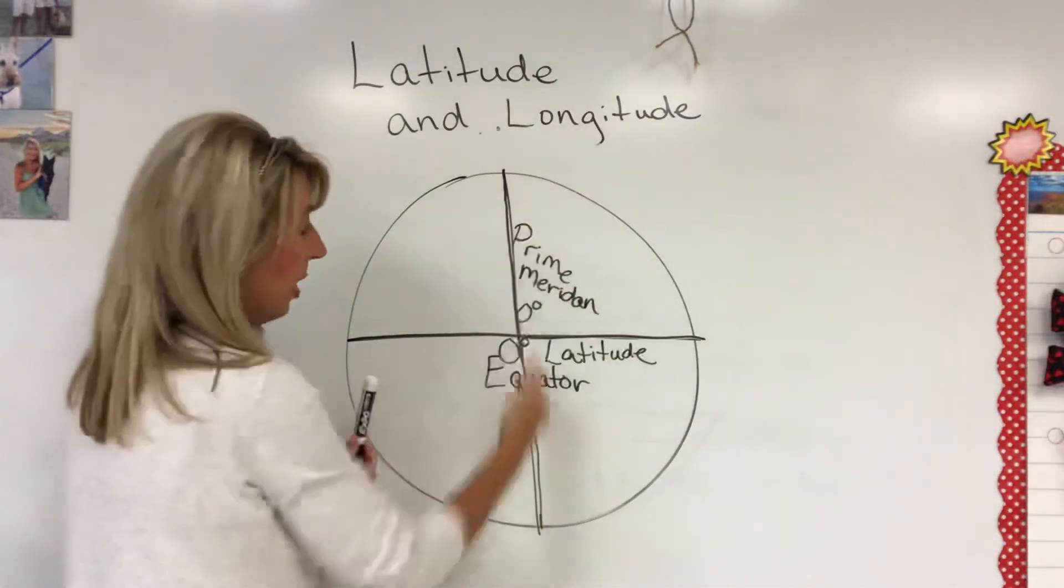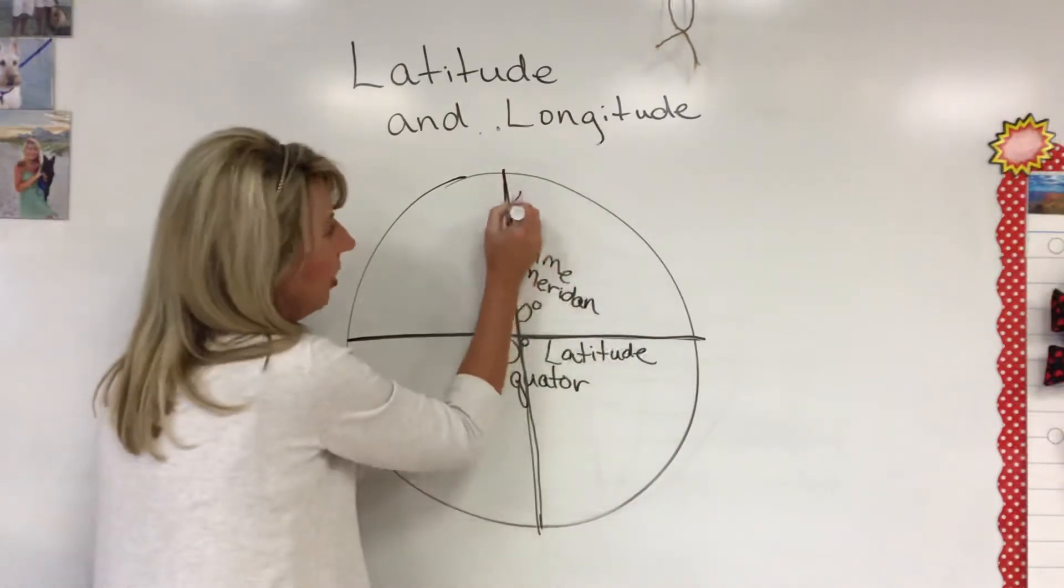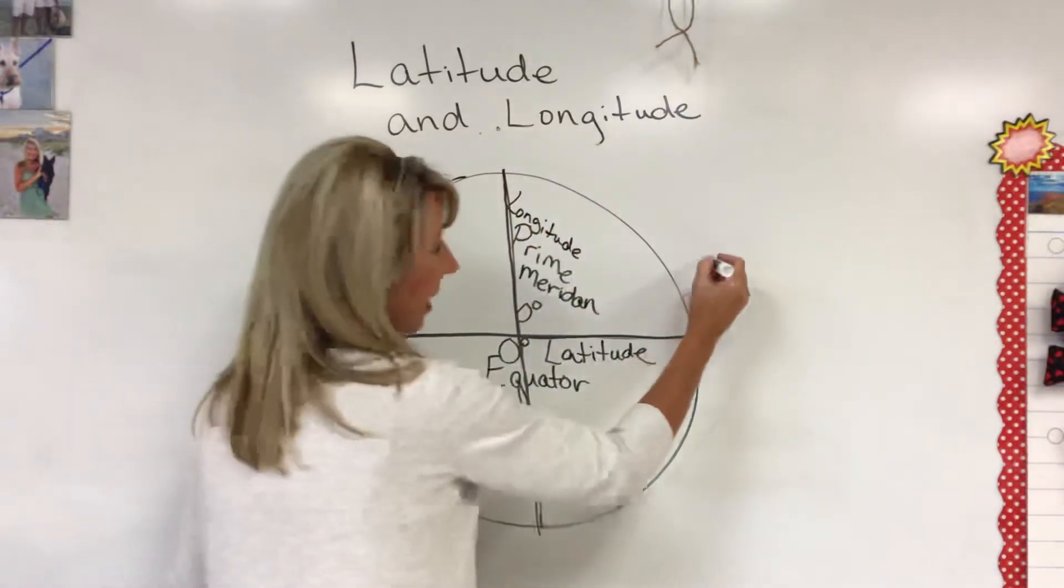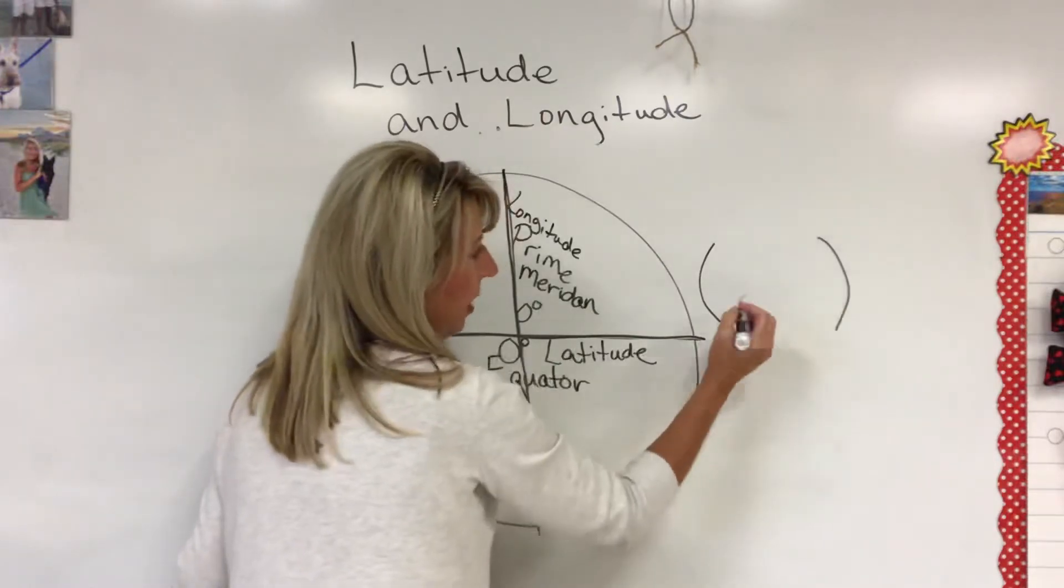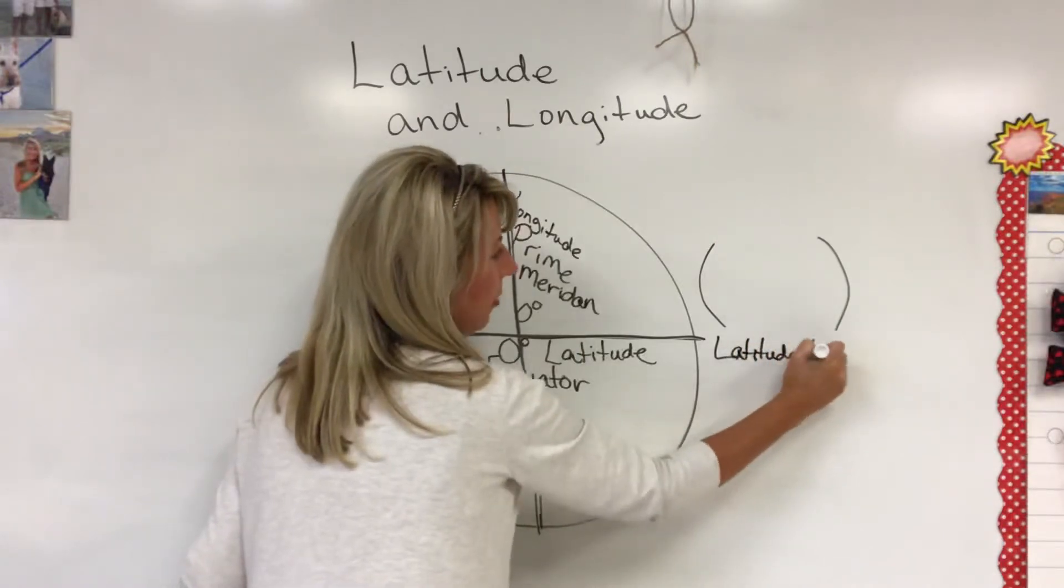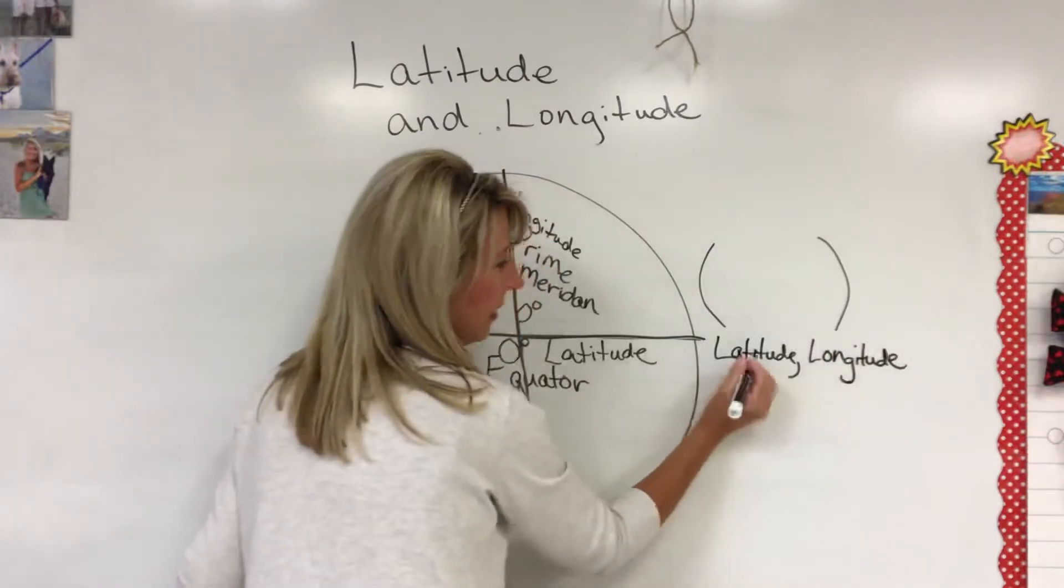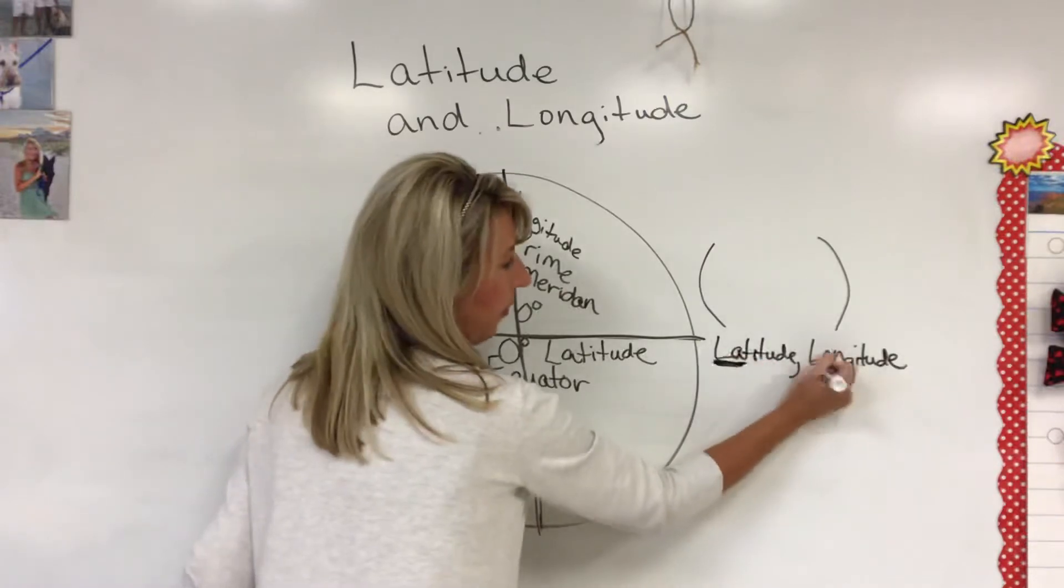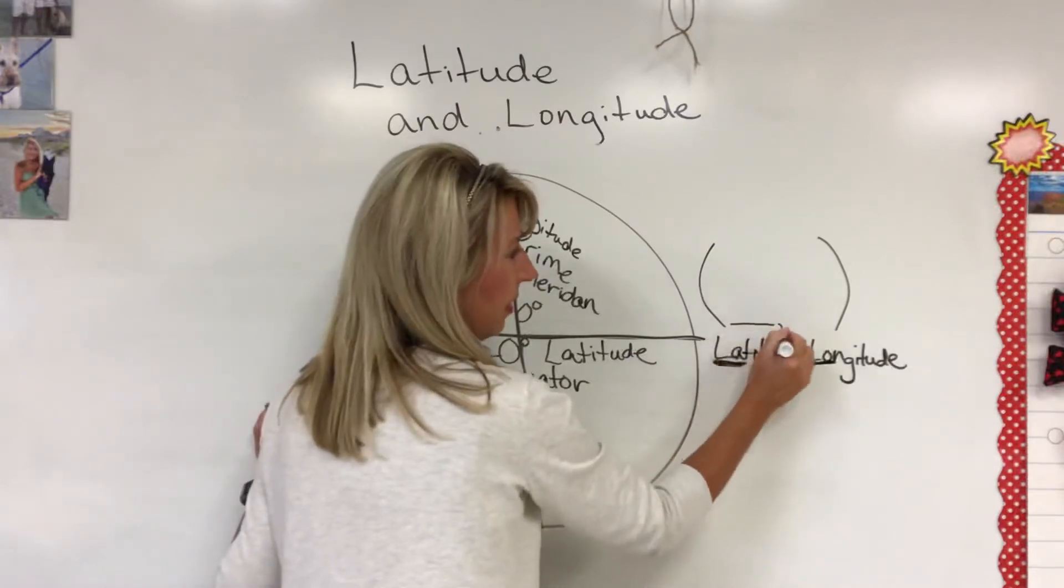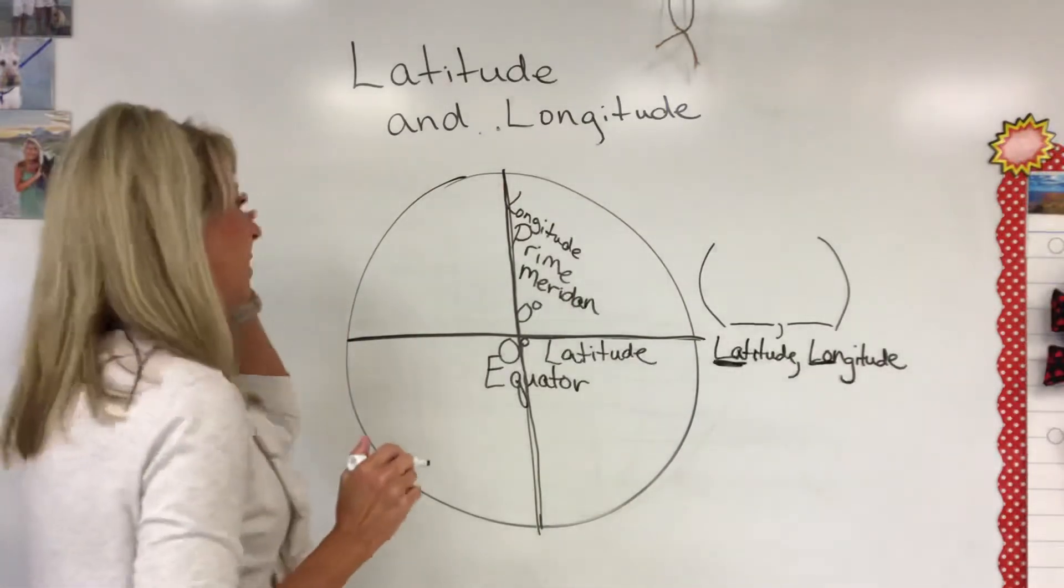Longitude would be your prime meridian which is long, so it runs from north to south. There's prime meridian which is a longitude line and your equator is your latitude line. When you write them out in a pair, the latitude always comes first and you usually separate them by a comma. The way I remember that is alphabetically LA comes before LO in the alphabet, so anything that's latitude is going to come first and then anything that's longitude will come second.